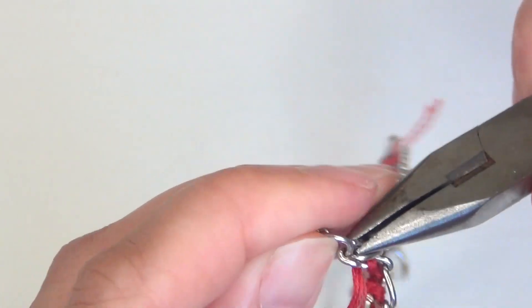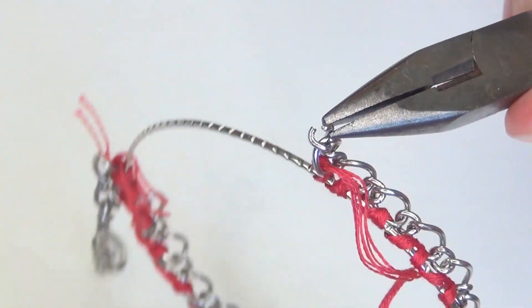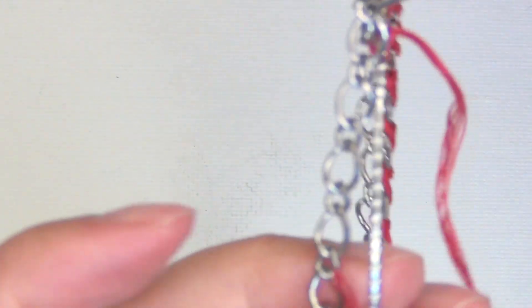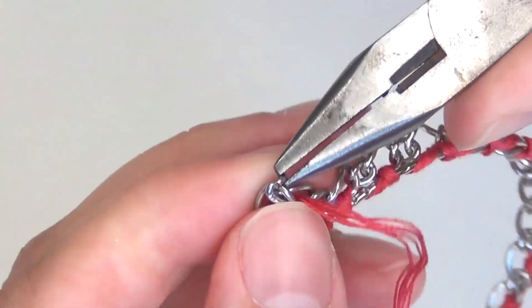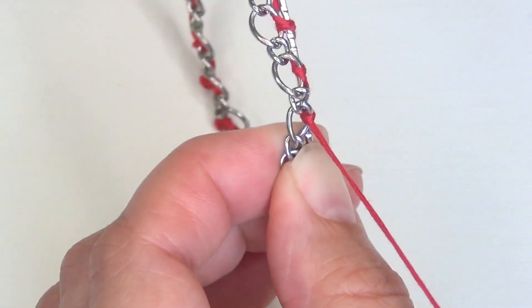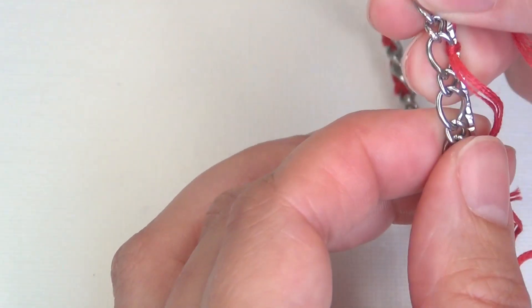You're going to have to cut your excess chain off so that you can attach that end link onto the end of your chain that has been dangling this entire time that you've been working. Simply open up one of the links and then close it over the end of the chain and you have a solid chain bracelet that is now attached to your bangle bracelet.